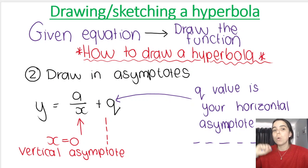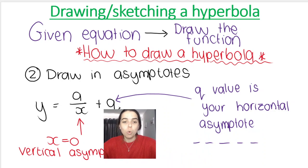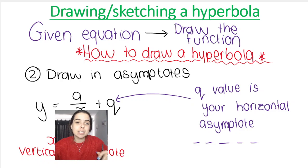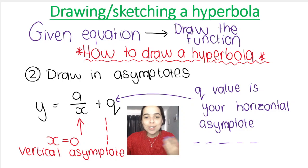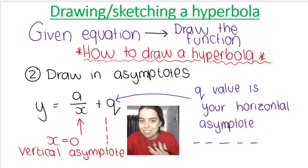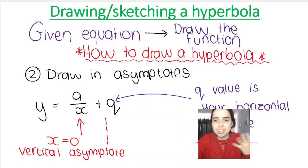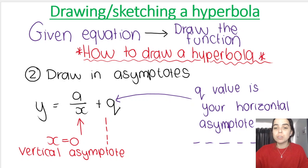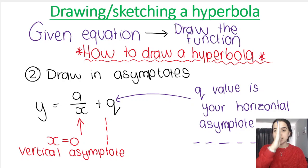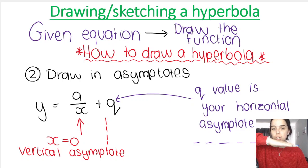After deciding on the shape, we draw in our asymptotes. For a hyperbola in the form y equals a divided by x plus q, remember x cannot equal zero because the function will be undefined at that point. So for our vertical asymptote, which runs along the y-axis, x equals zero. Our horizontal asymptote depends on the value of q.